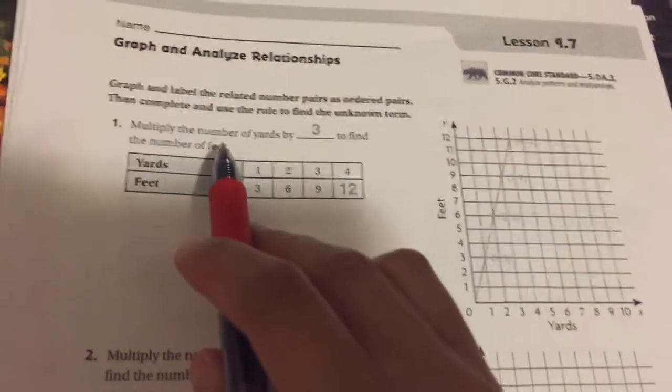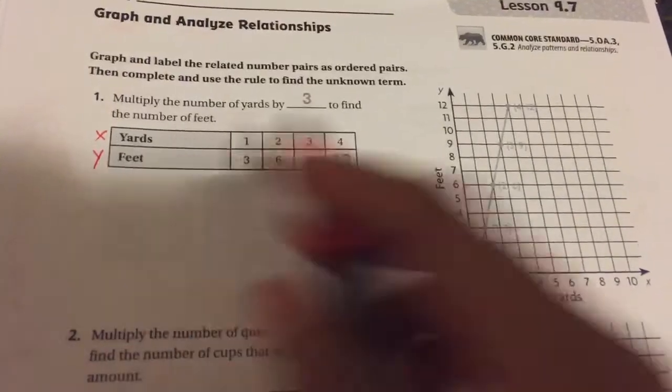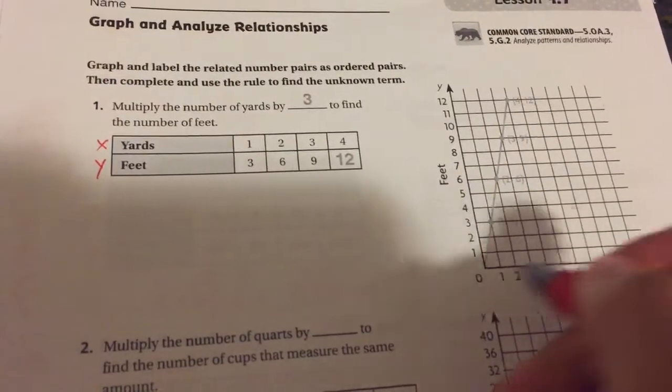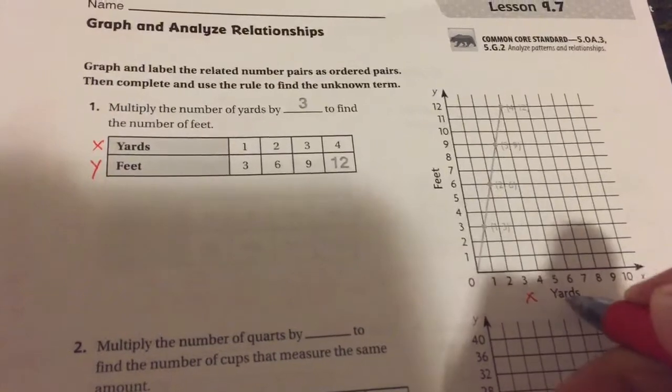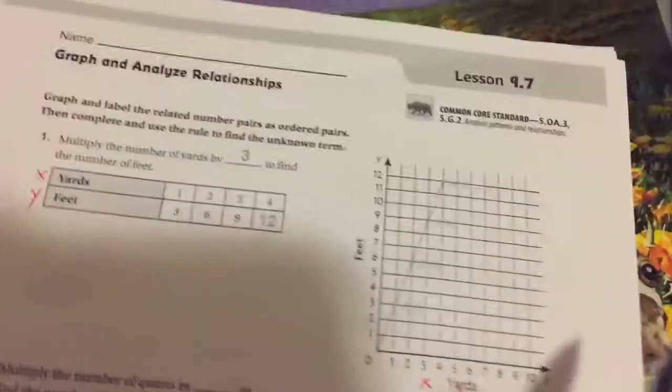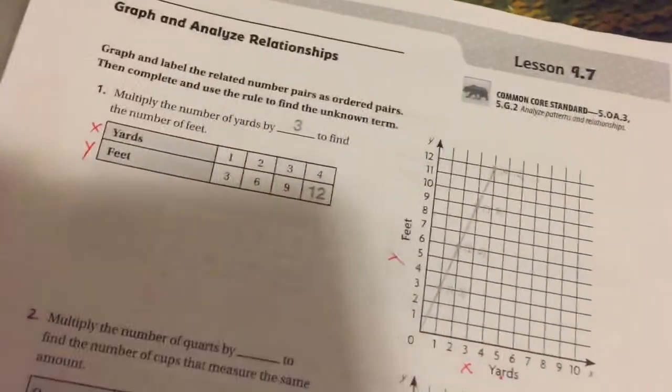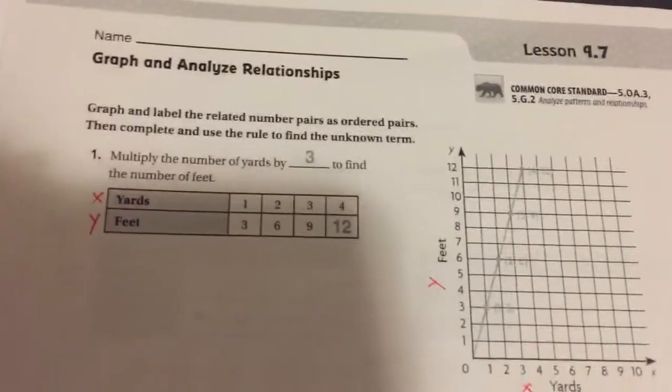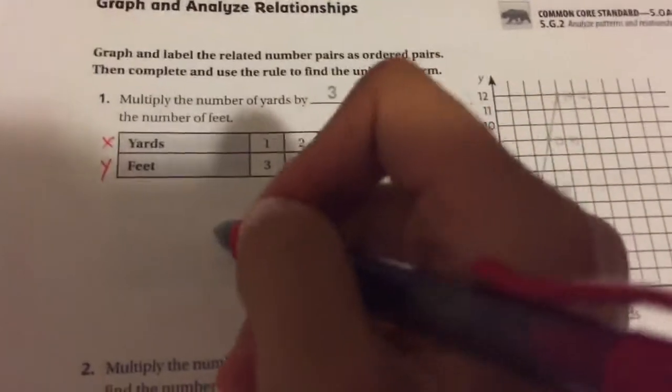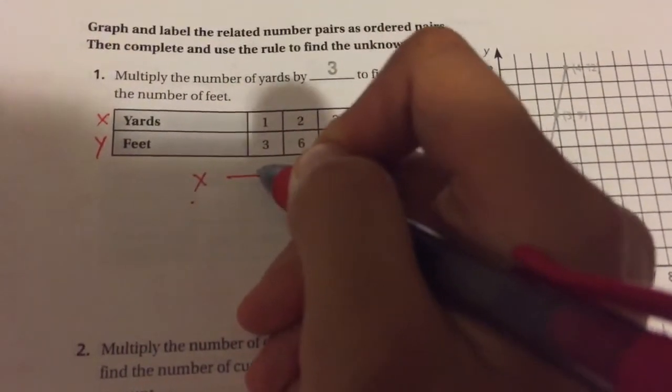So let's do this the way that we did both 9-5 and 9-6, which is start by labeling your X and your Y. The reason why I know that that's my X is that your X-axis goes left and right, so this right here is your X-axis, and your X is your yards, and the Y-axis goes up and down, and your Y is your feet. So there's my X and there's my Y. To help you, we're going to find our pattern by doing X, Y.